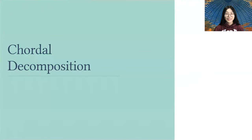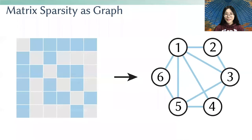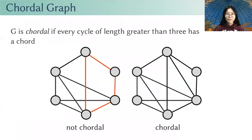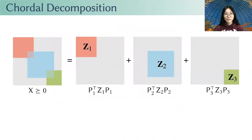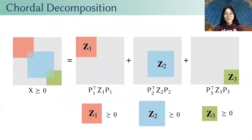So how do we project a matrix with an arbitrary sparsity pattern to positive semi-definite while maintaining its sparsity? The answer is chordal decomposition. Typically, the sparsity pattern of a matrix can be represented by a graph. A chordal graph is a special graph that can be easily decomposed into smaller graphs. A graph is chordal if every cycle of length greater than 3 has a chord. We can use chordal decomposition to split a large sparse PSD constraint into multiple smaller dense PSD constraints.